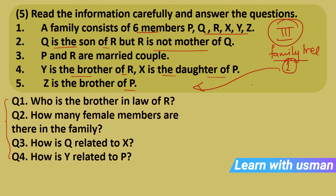This is the most productive kind of question — draw one family tree and answer 4 questions. Even if you spend 30–40 seconds drawing carefully, you will score full marks. Remember all symbols and you will solve all questions correctly.